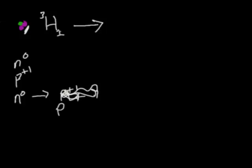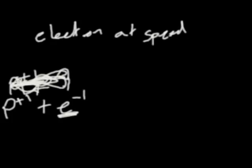the neutron goes to a proton and an electron. And this electron is ejected at speed, and that is beta radiation. So, beta radiation is an electron ejected at speed.